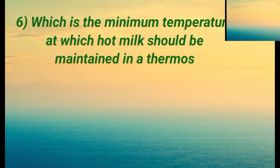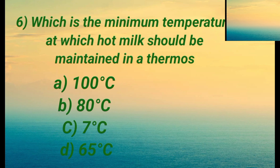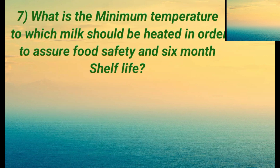Question six: what is the minimum temperature at which hot milk should be maintained in a thermos? Option A is 100 degrees Celsius. Option B is 80 degrees Celsius. Option C is 7 degrees Celsius. Option D is 65 degrees Celsius. The right answer is B: 80 degrees Celsius.